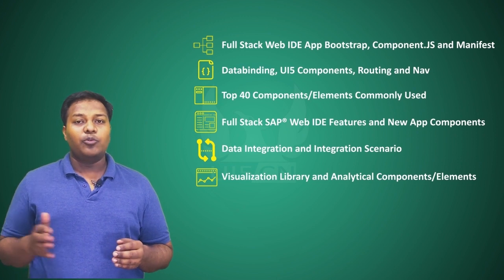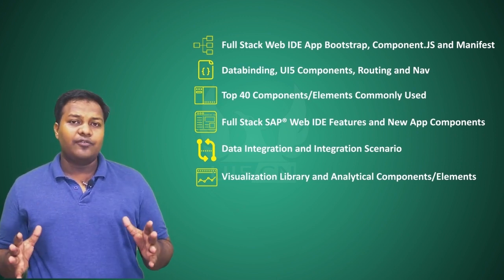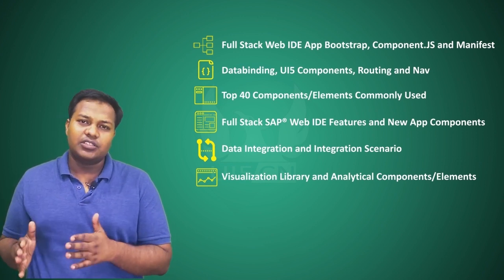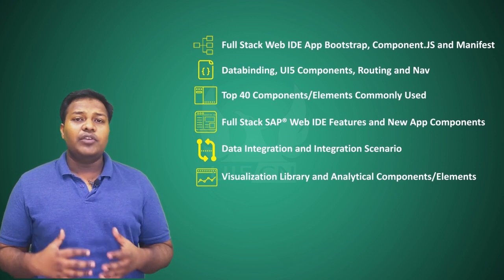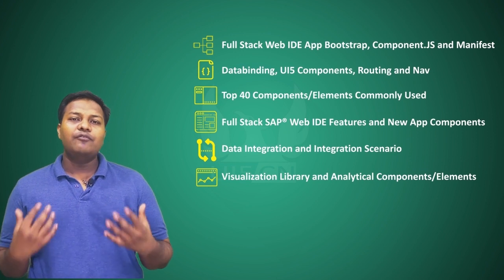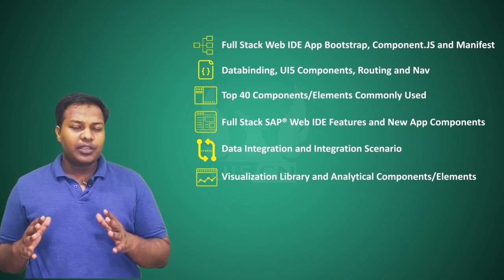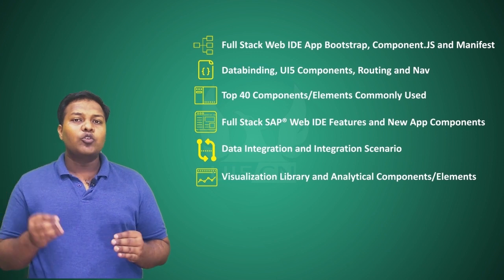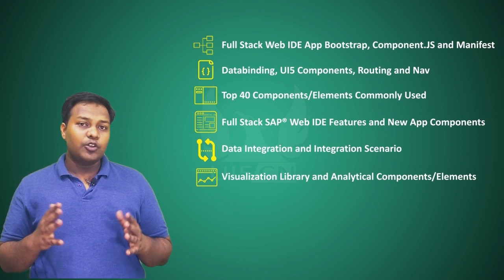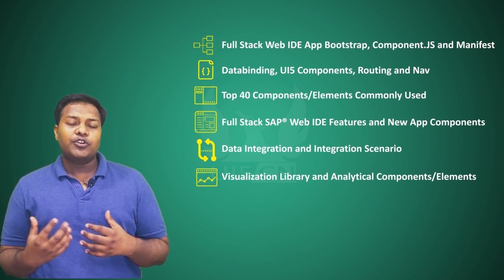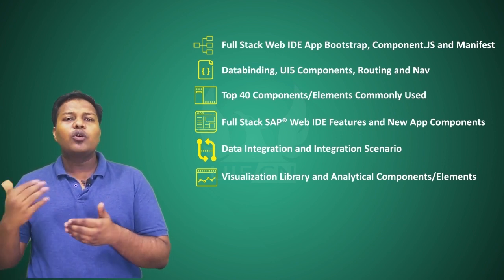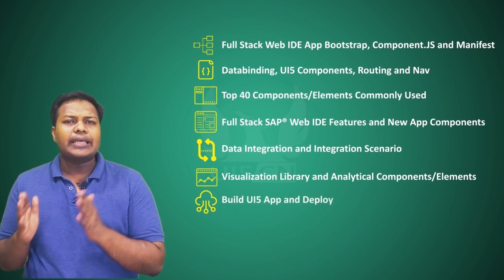With version 1.63, there are many different types of graphs, charts, and analytics available. It's not just basic charts — we now have graph components, map components, and network components. We'll cover the major components, give you a basic overview of the library and details on how to implement them, and provide template code so you can bring those elements into your project.